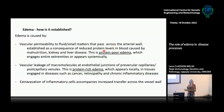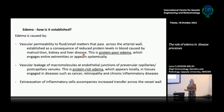Protein-poor edema can be seen in a number of systemic diseases where protein concentrations go down — for example, malnutrition, kidney and liver diseases. Many people also experience it when they fly, and their extremities get swollen. This is not the type of edema that I will talk about.